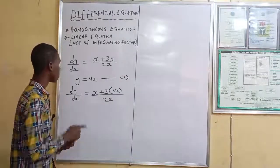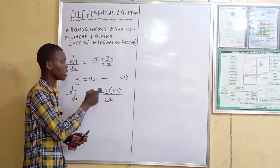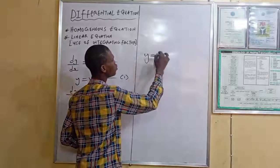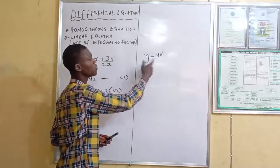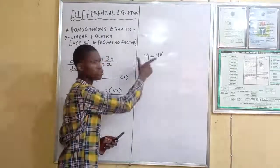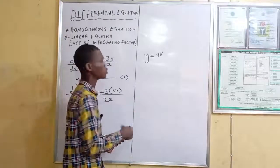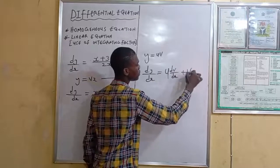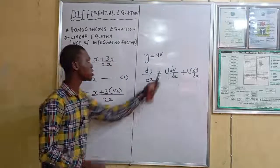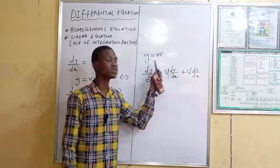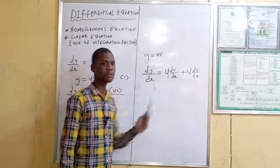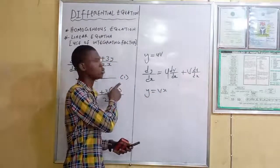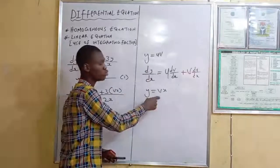Observe: if y equals vx, consider what this means from differentiation. From the product rule — given y equals u times v, the derivative is u·dv/dx plus v·du/dx. It is a product rule because we have two functions multiplying each other, namely u and v.